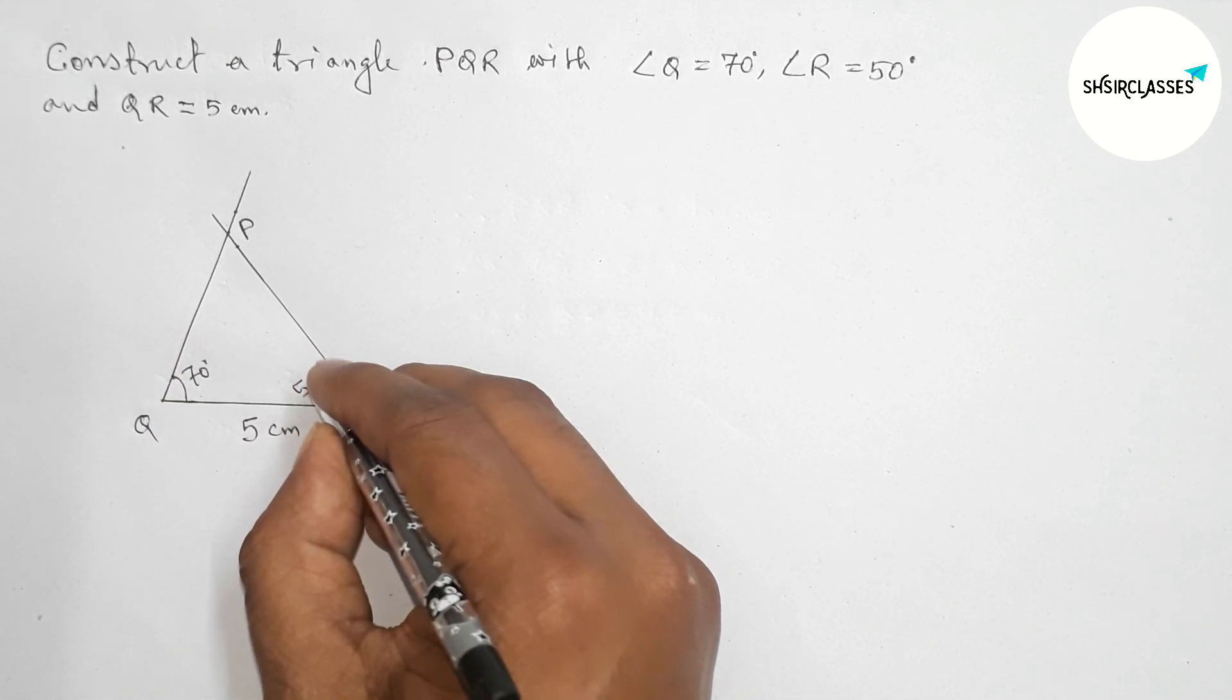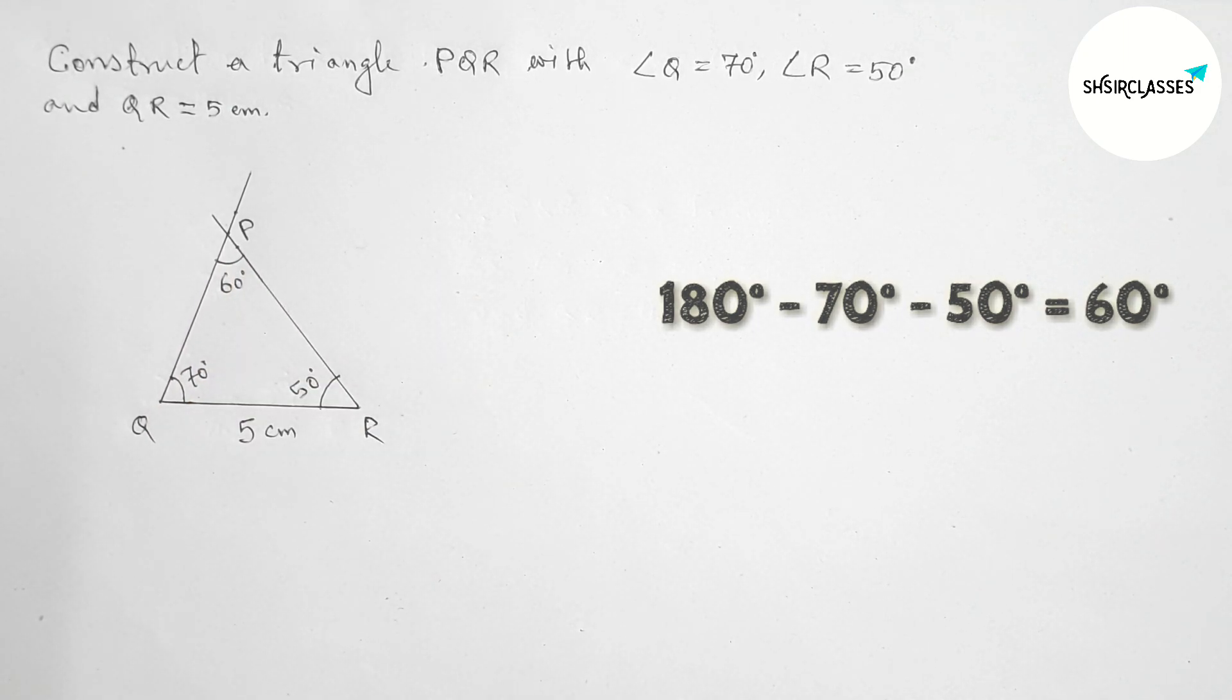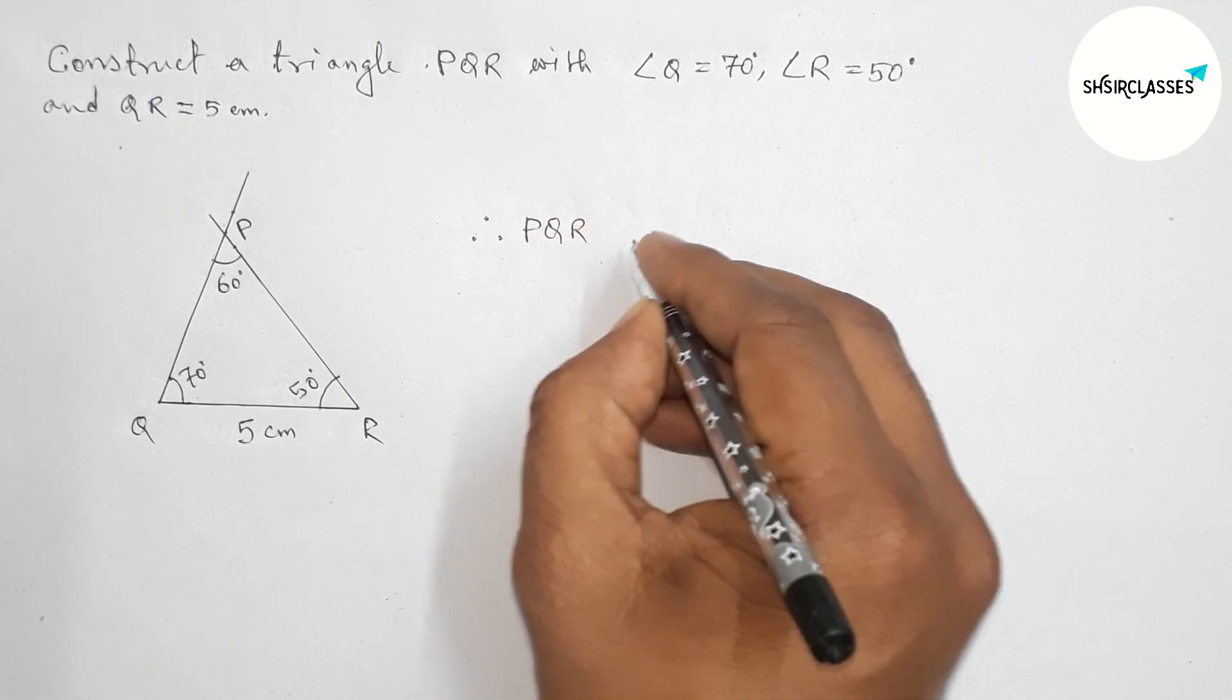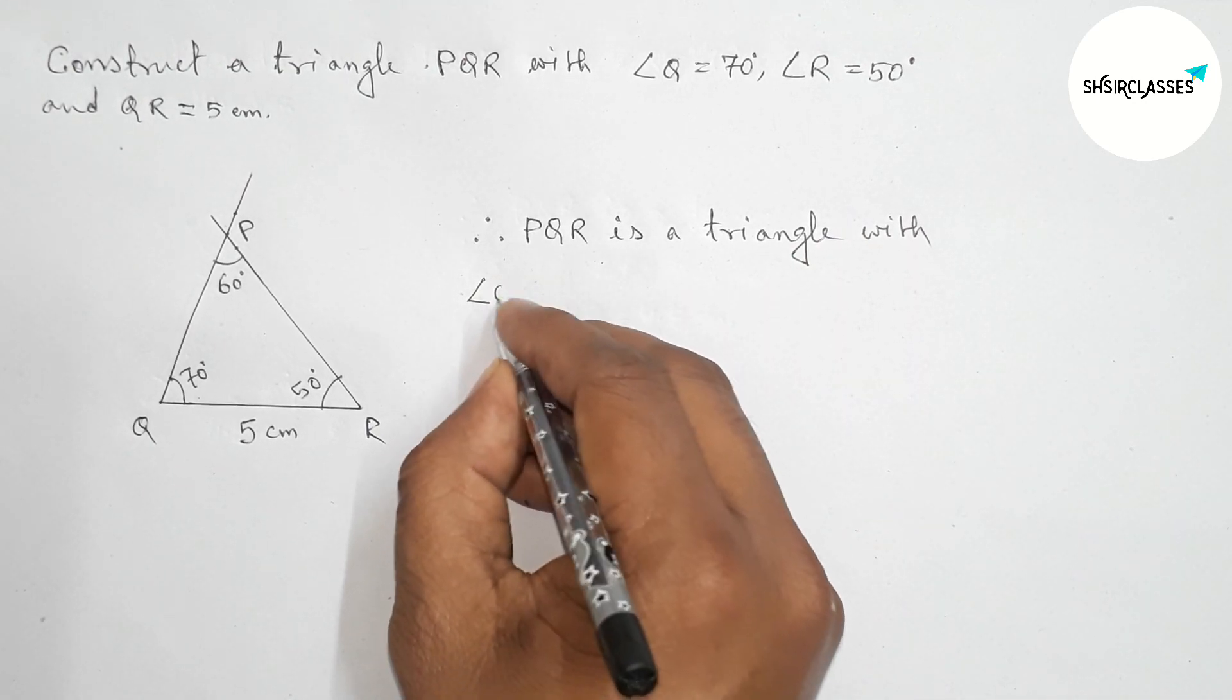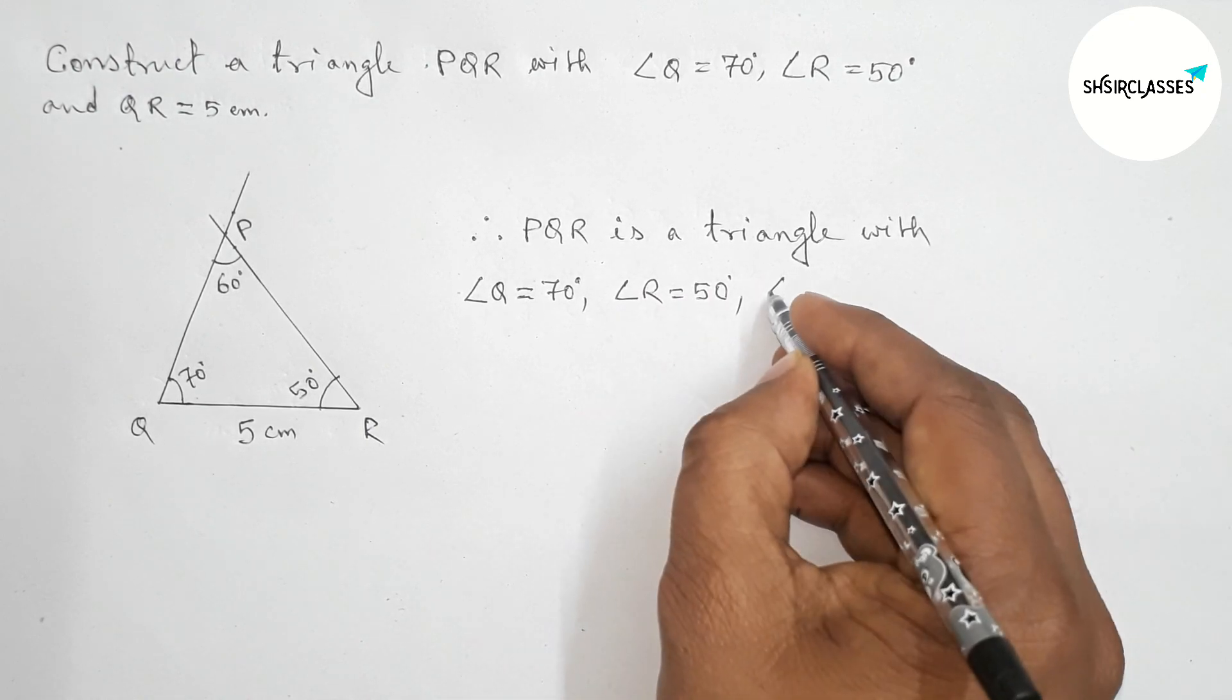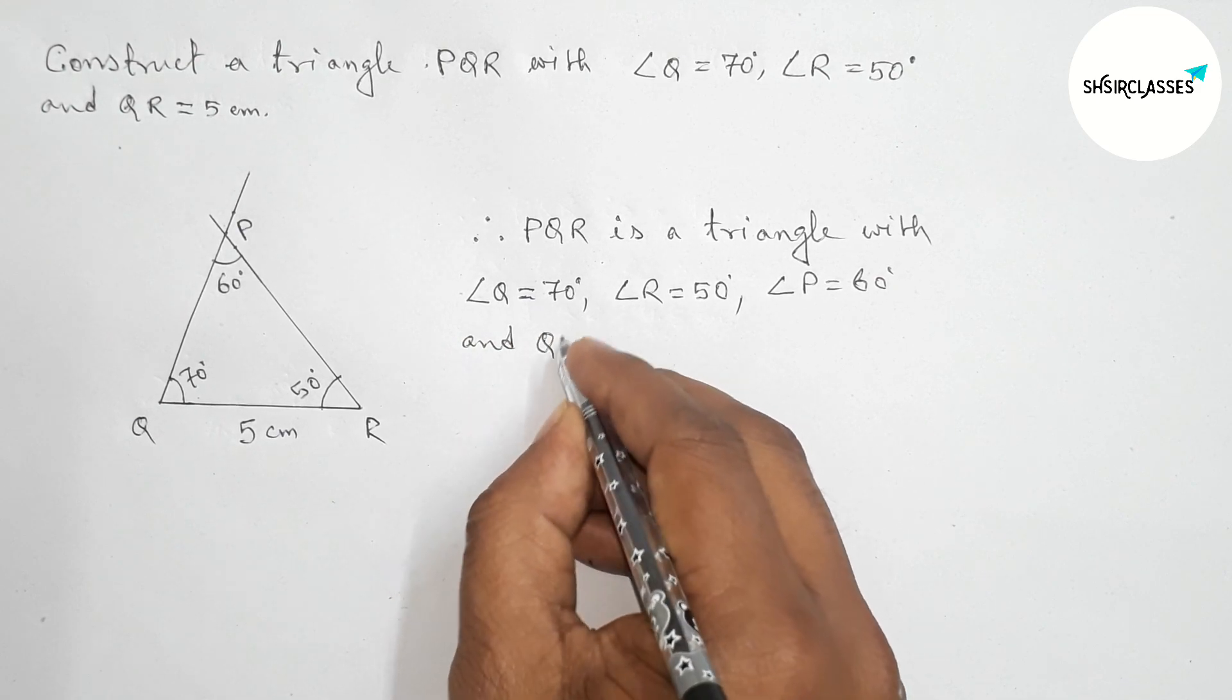Angle R is 50 degrees, and obviously angle P is 60 degrees. Therefore, PQR is a triangle with angles: angle Q 70 degrees, angle R 50 degrees, angle P 60 degrees, and side QR 5 centimeters.